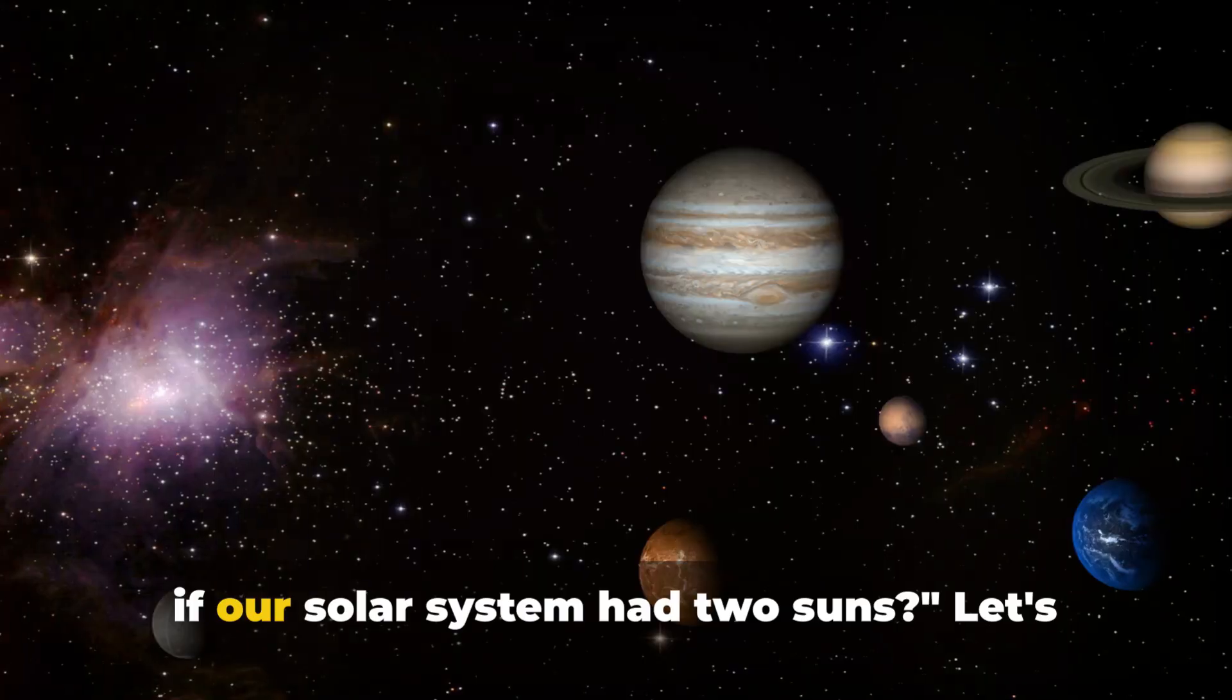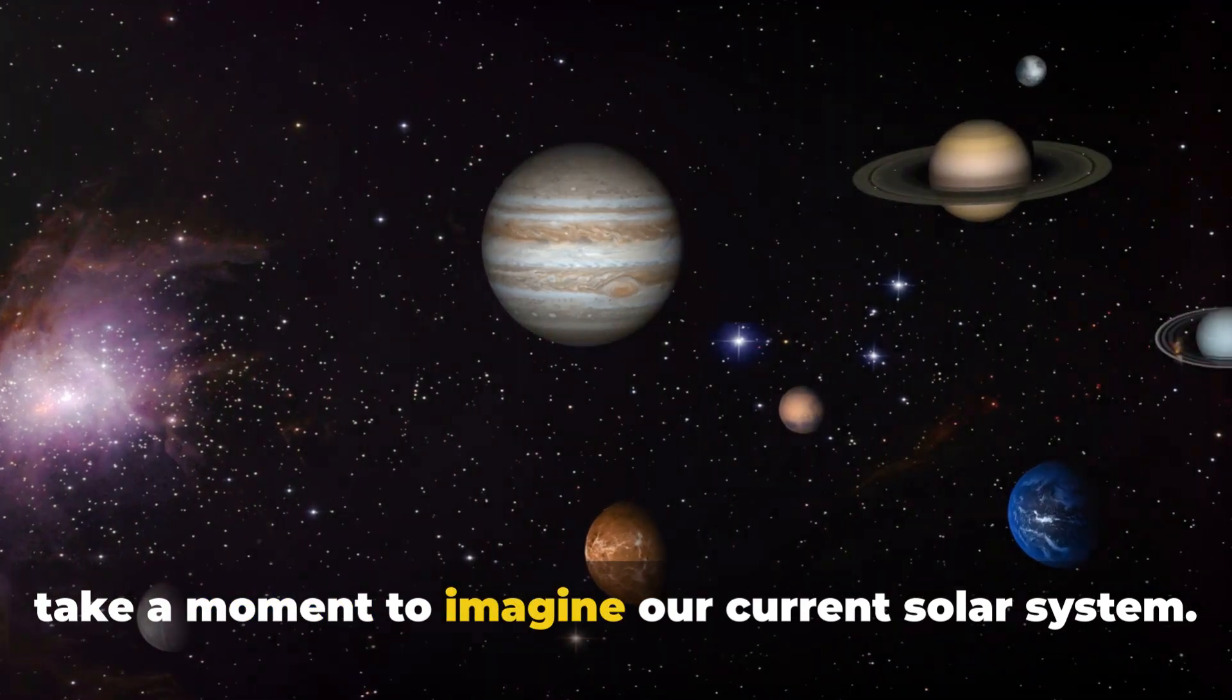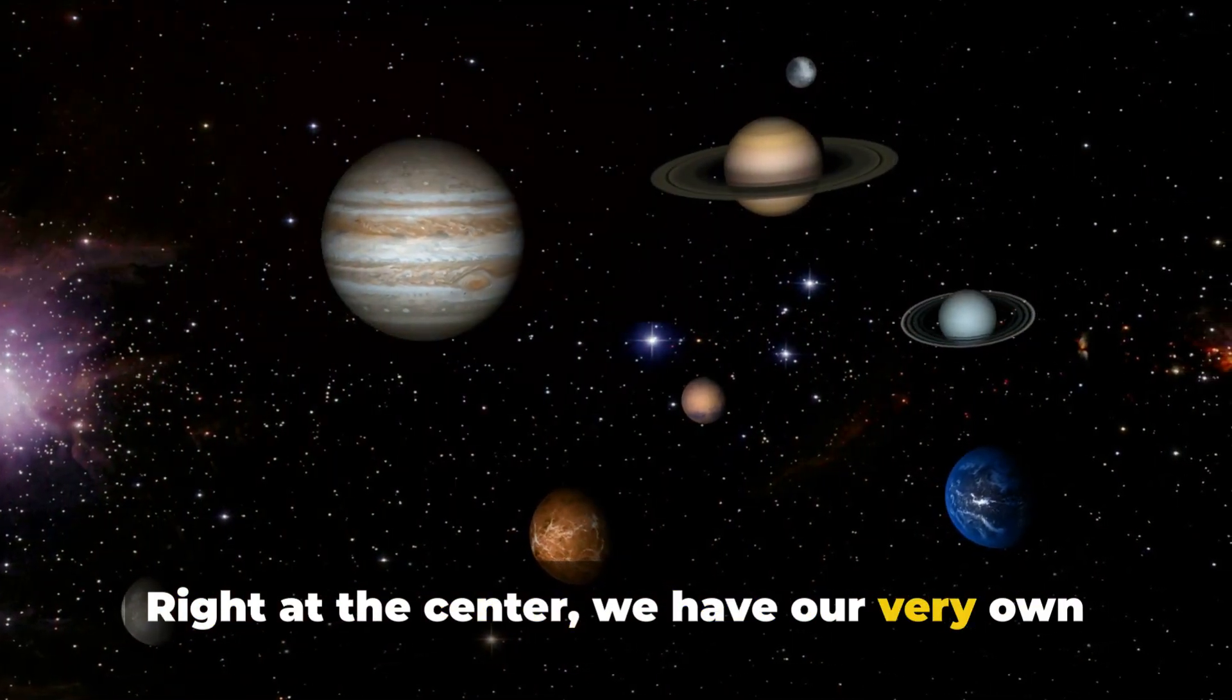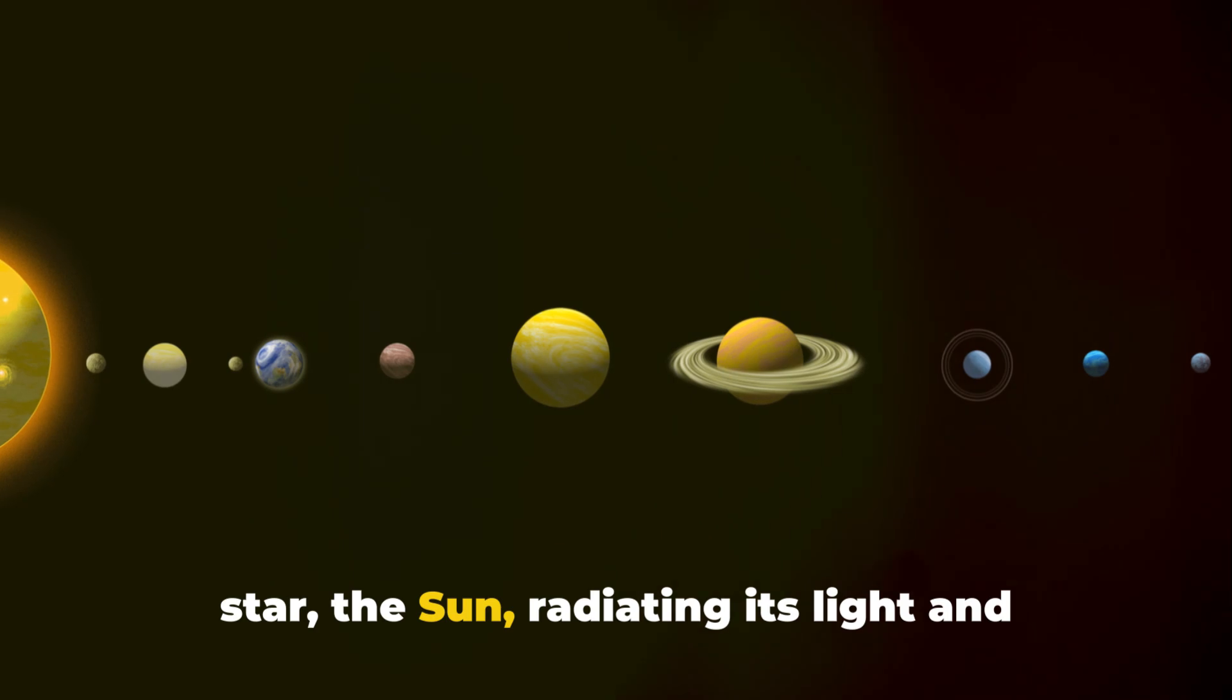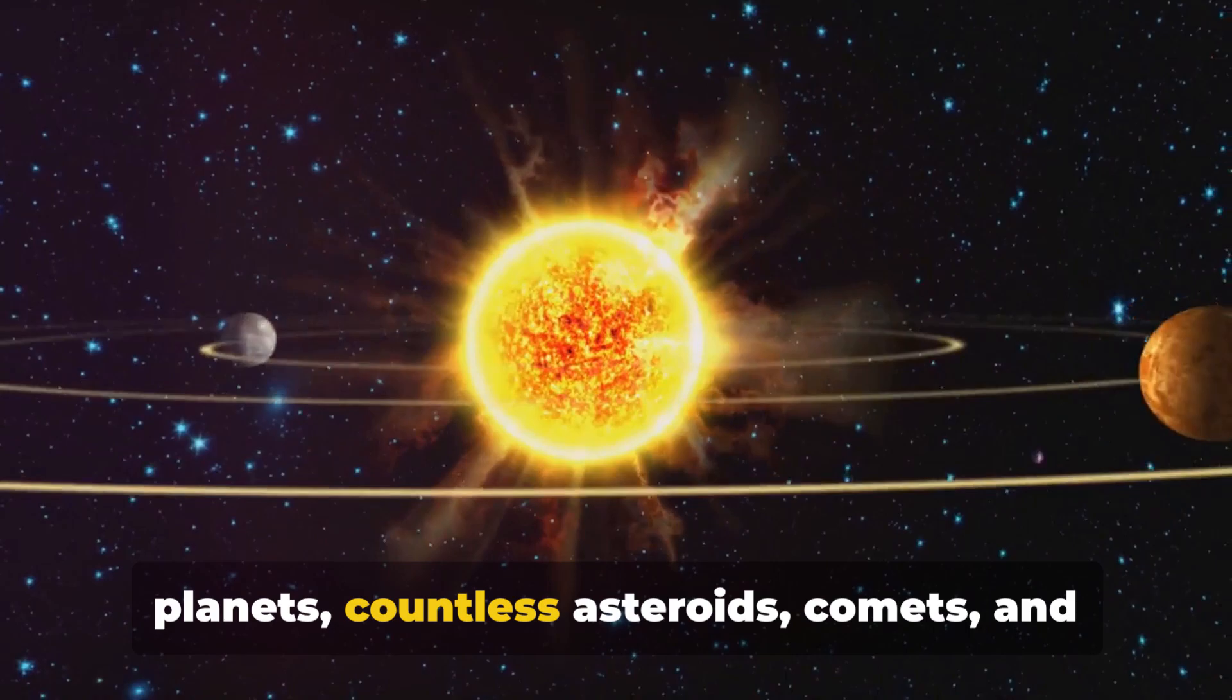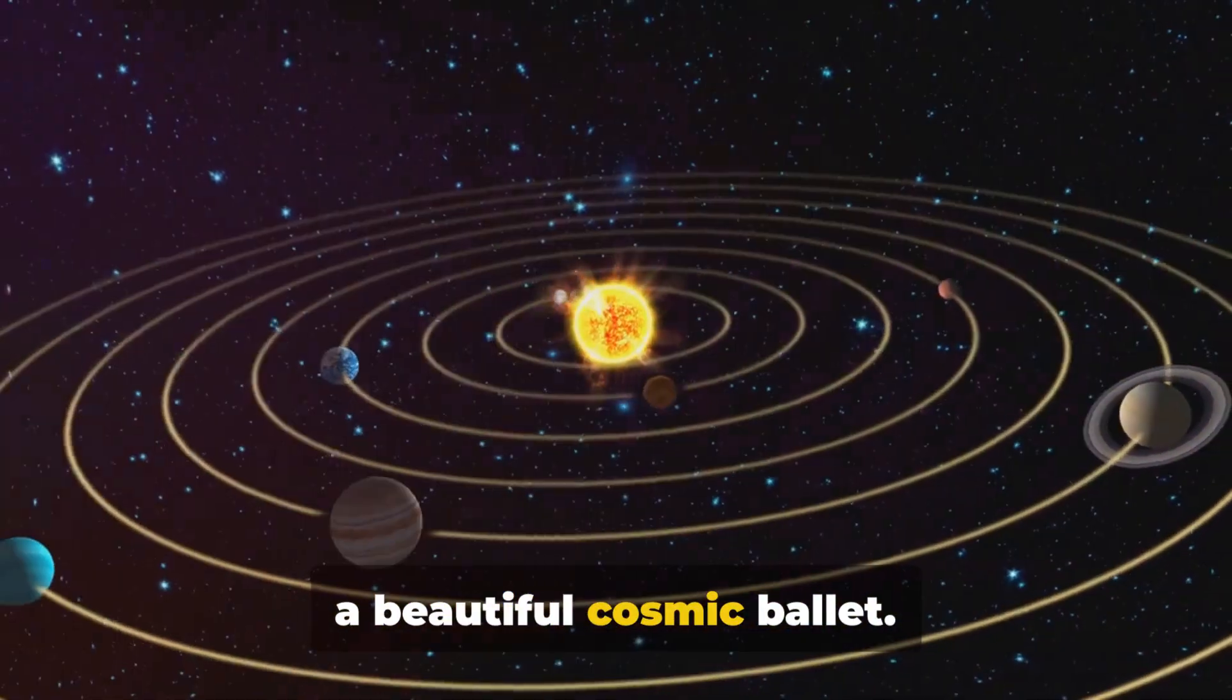Have you ever wondered what would happen if our solar system had two suns? Let's take a moment to imagine our current solar system. Right at the center, we have our very own star, the sun, radiating its light and warmth across space, reaching eight planets, countless asteroids, comets, and dwarf planets all revolving around it in a beautiful cosmic ballet.